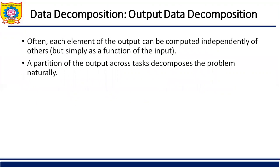Now suppose we select output data decomposition. If the data is output data, we need to decompose that output data. For example, A plus B equals C — the output data here is C. We select C as the output data for decomposition. In input data decomposition we would focus on A and B. But right now we focus on output data decomposition. Often, each element of the output can be computed independently, simply as a function of the input, so a partition of output across tasks decomposes the problem naturally.